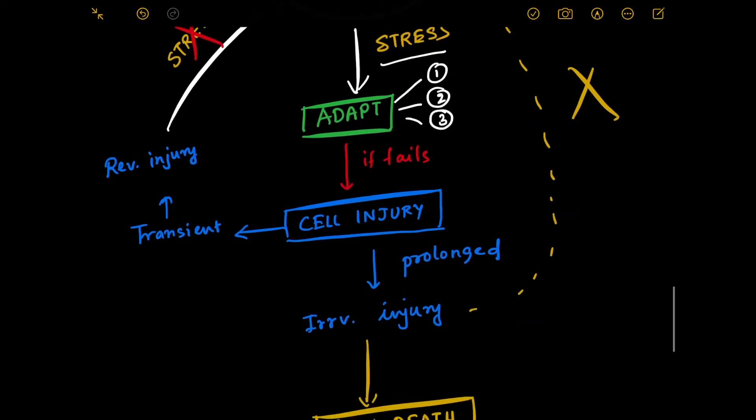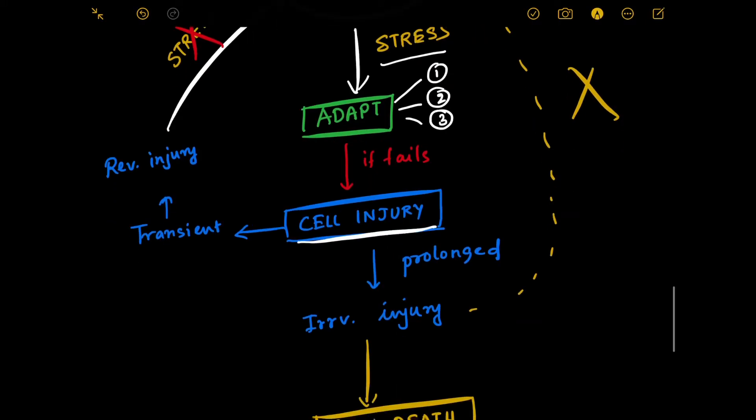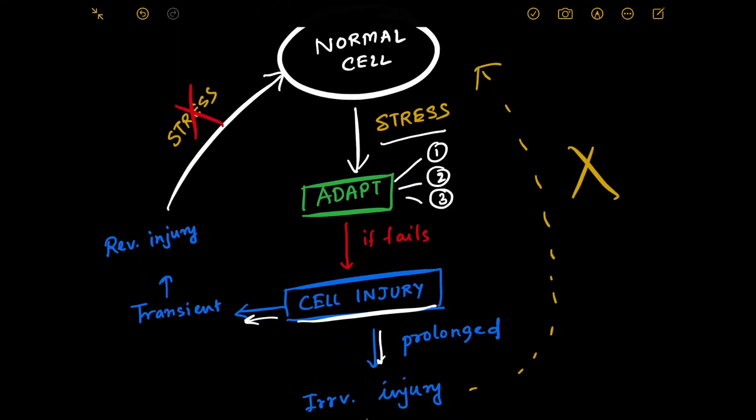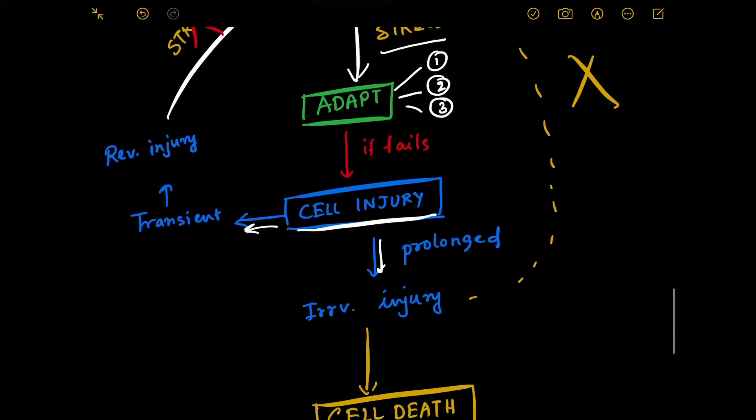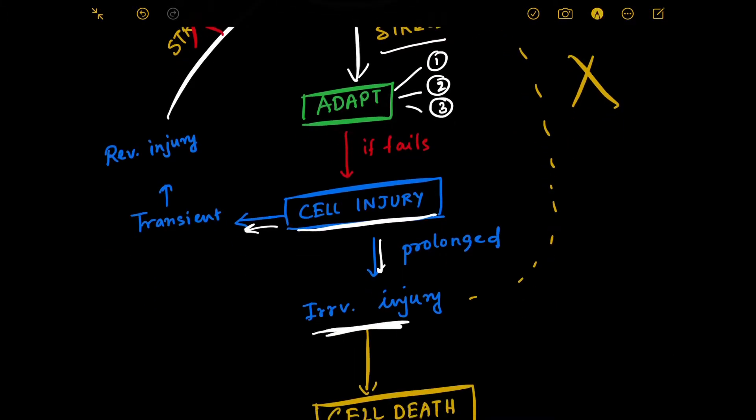If it fails to adapt, then cell injury occurs. Cell injury can be either prolonged or transient. If there's a transient cell injury, that leads to reversible cell injury that can be reversed when the stressor is gone. But if the injury is prolonged, in most cases that leads to irreversible cell injury. In that case, you won't be able to reverse the injuries upon removal of the stress, and the cells will be bound to go for cell death.